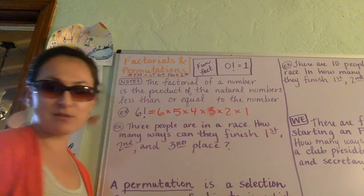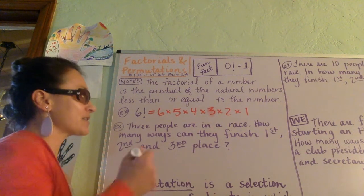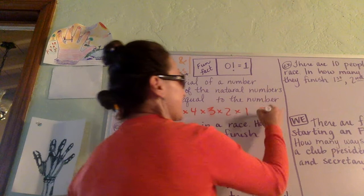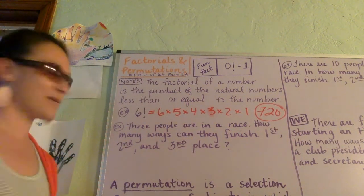When you multiply those all together, 6 factorial is 6 times 5 times 4 times 3 times 2 times 1. 6 factorial is 720.